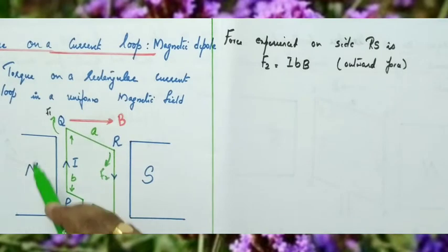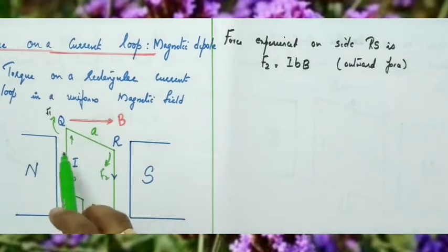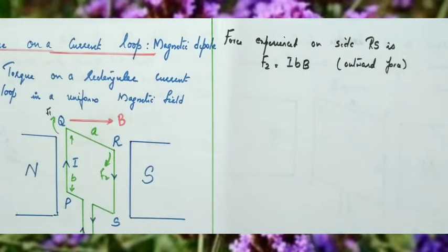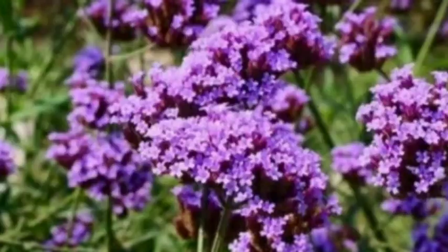There are two forces: a normally inward force and a normally outward force acting at two ends of the rectangular current loop. These two equal and opposite forces constitute a couple.